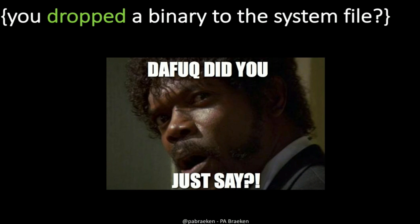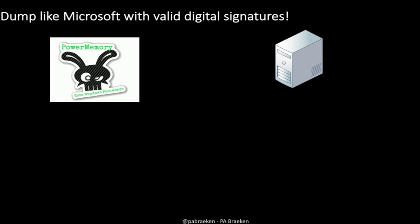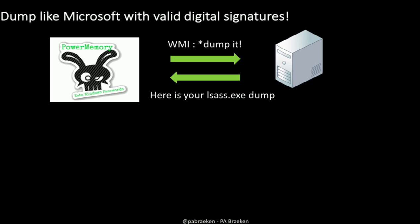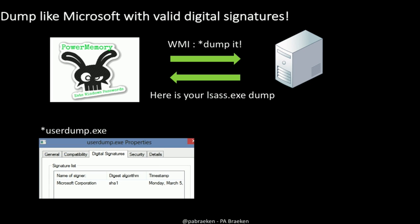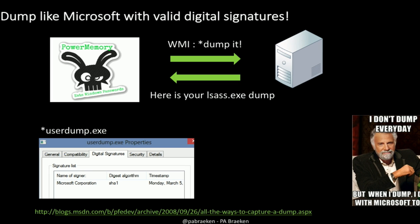I do drop a binary file on the filesystem — you might say that touches your disk, which is not ideal. But I can also do it this way: the server tells PowerMemory to dump it, and to do that I use userdump.exe, which is a Microsoft tool and is signed by Microsoft. Microsoft wrote a very good article in 2008 listing many signed tools they created that can lead to dumping process memory. So when I dump, I do it with Microsoft tools.